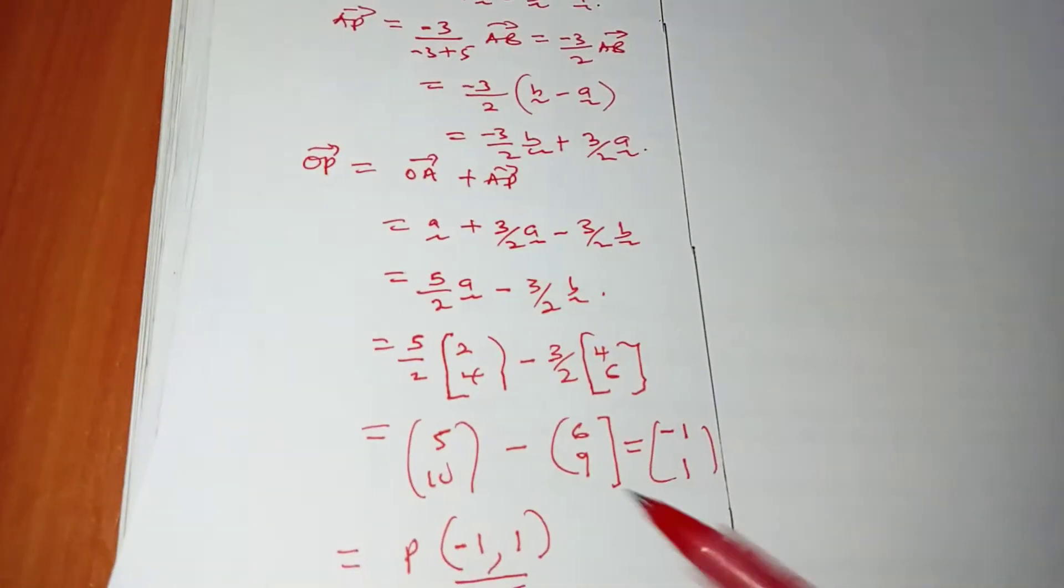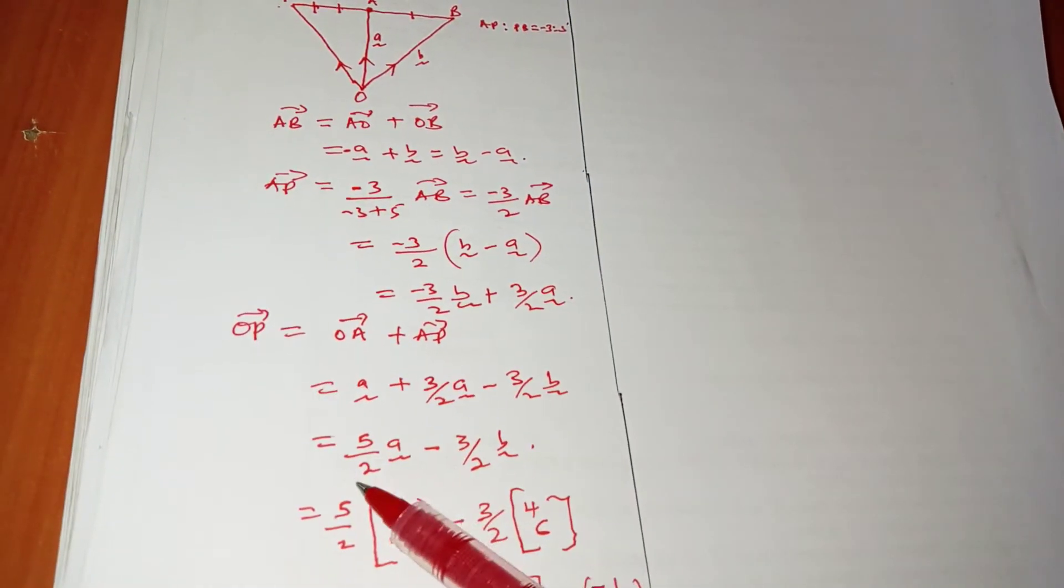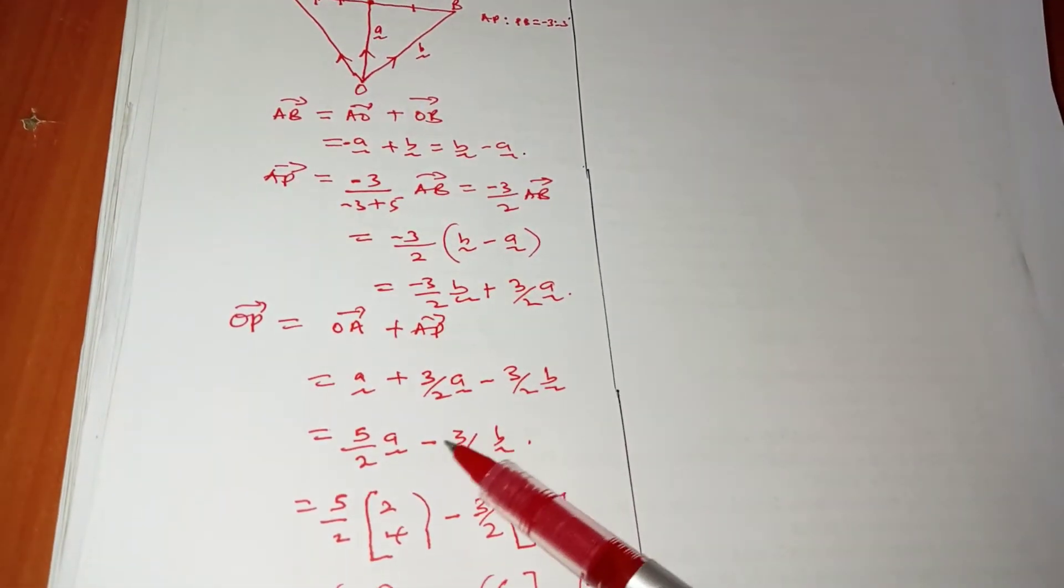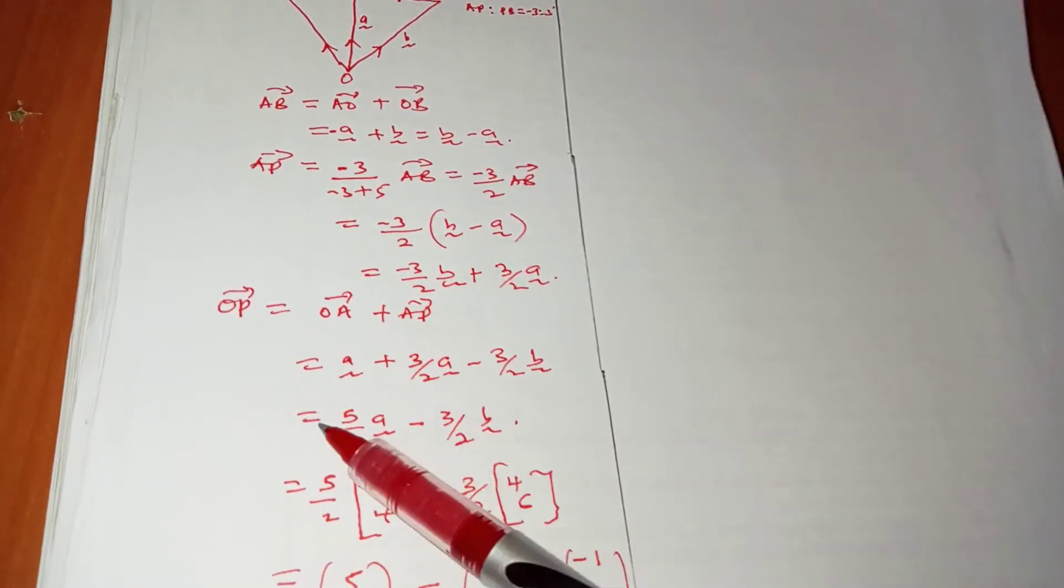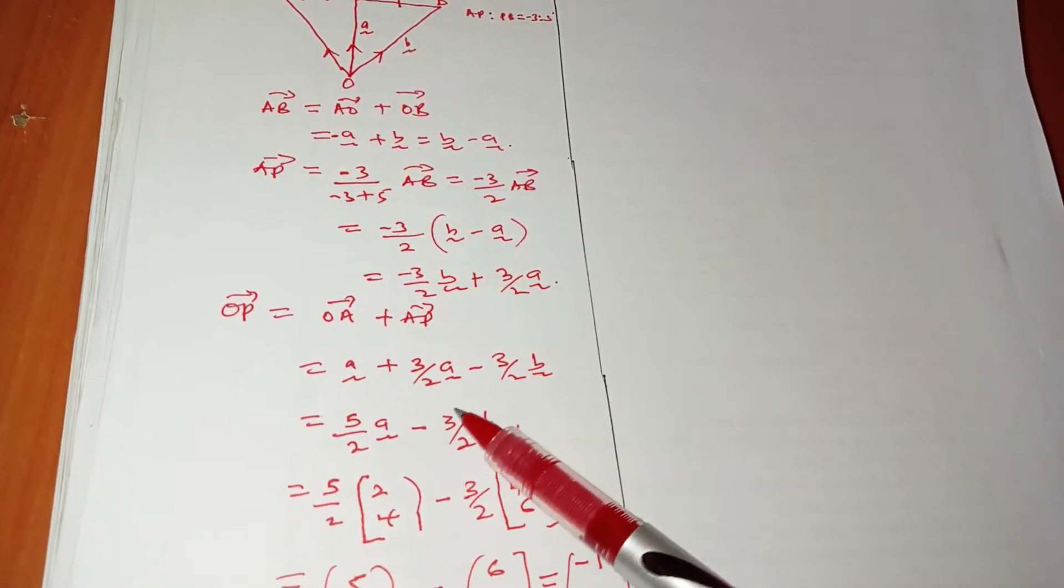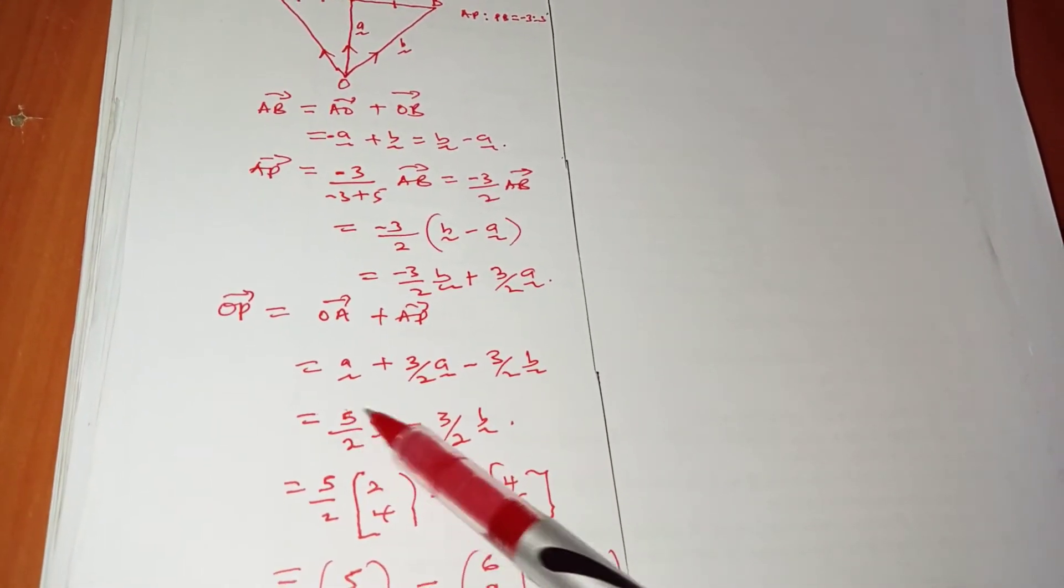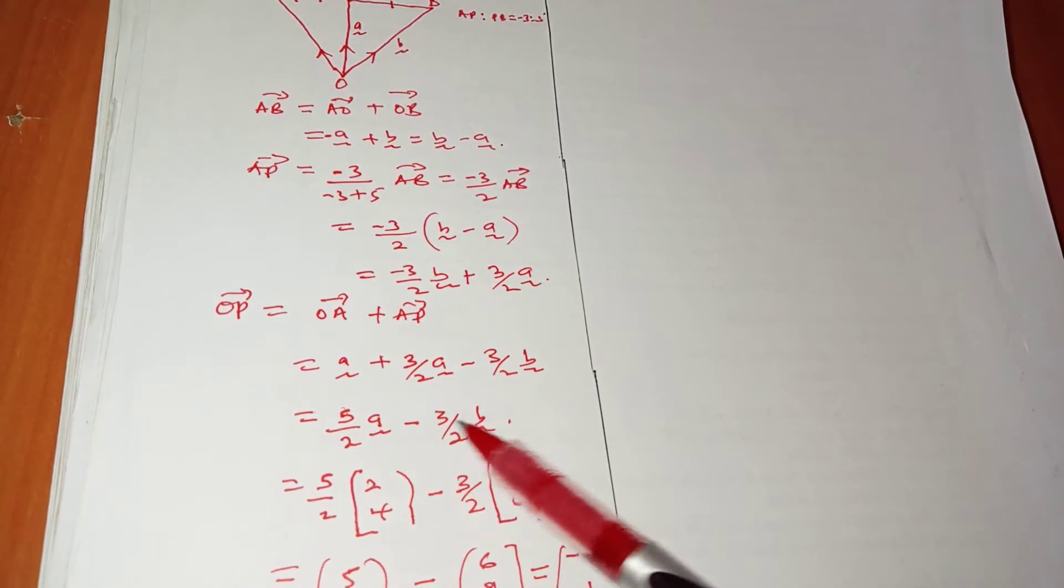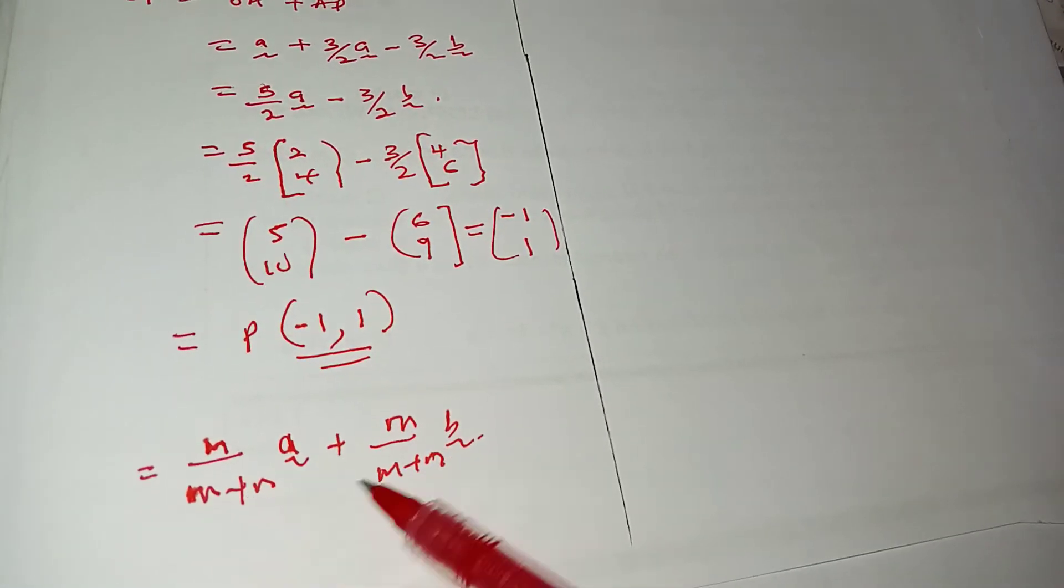You can see if my M is -3 and my N is 5, that is why we started with the 5 out of the sum. This is our N, this is our M, and you can see N is multiplied by A here, and our M is multiplied by B, just like the ratio theorem formula.